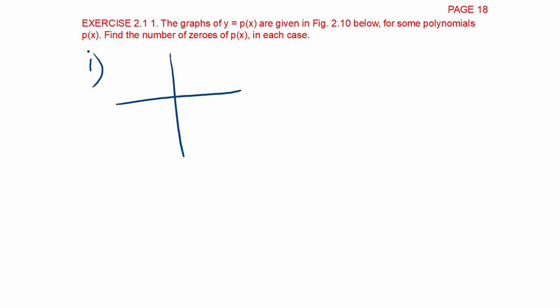They have given few graphs as in the example and we have to find the number of zeros in it. In the first graph, it is a straight line. It is not touching the x-axis anywhere, so the number of zeros is 0.